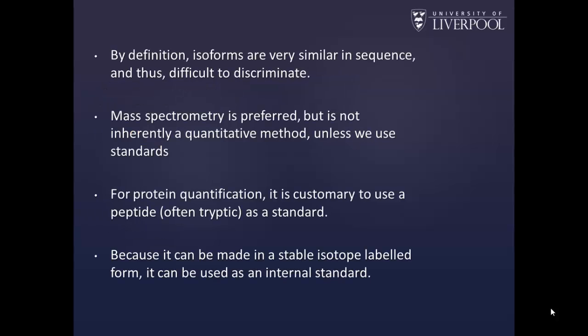Almost by definition, isoforms are very similar in protein sequence and they're not easy to discriminate. You would choose to do this in most instances with mass spectrometry, but mass spectrometry is not inherently a quantitative method unless we introduce standards. For protein quantification, we would normally collect a peptide, or more than one peptide, often tryptic, as surrogates and use them as standards. One of the nice things about mass spectrometry approaches is that because we can make these in a stable isotope labeled, or heavy form, we can use them as internal standards as well.